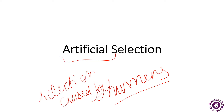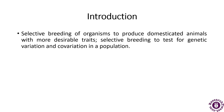It is a deliberate and planned process that leads to deliberate genetic change. The genetic constitution of the population changes rapidly, and this is an ongoing process to obtain higher yields, superior nutrients, and resistance to diseases. Selective breeding is the breeding of organisms to produce domesticated animals with more desirable traits, and to test for genetic variation and co-variation in a population.